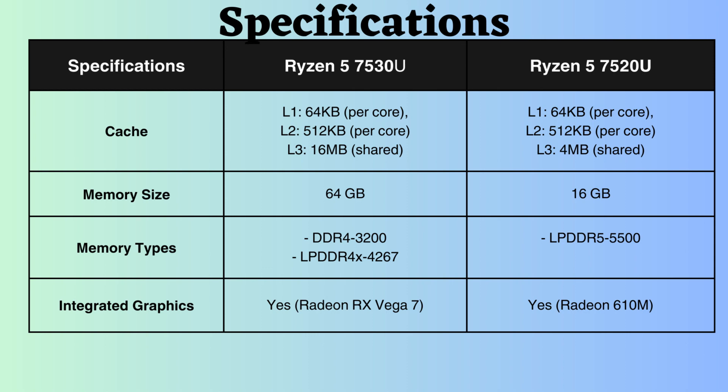Additionally, the memory size supported by the Ryzen 7530U is 64GB, while the Ryzen 7520U only supports up to 16GB. In this aspect as well, the Ryzen 7530U outperforms the Ryzen 7520U. The Ryzen 7530U supports both DDR4 and LPDDR4 RAM, whereas the Ryzen 7520U supports LPDDR5. Moreover, for LPDDR, the memory speed of the Ryzen 7520U is faster than that of the Ryzen 7530U.